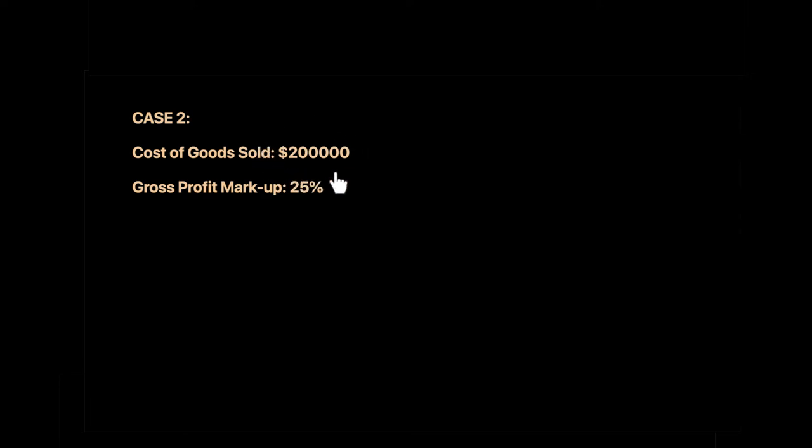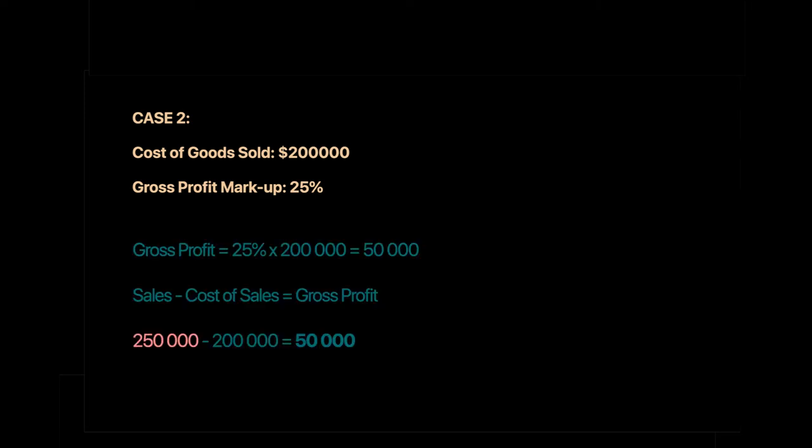Case 2: Cost of goods sold = 200,000 and gross profit markup = 25%. Since markup is gross profit as a percentage of cost of sales, gross profit = 25% × 200,000 = 50,000.